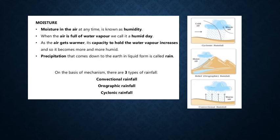Rainfall is very important for the survival of plants and animals as it brings fresh water to the earth's surface. If rainfall is less, water scarcity and drought occur. On the other hand, if it is more, floods take place. On the basis of mechanism, there are three types of rainfall: conventional rainfall, orographic rainfall, and cyclonic rainfall.